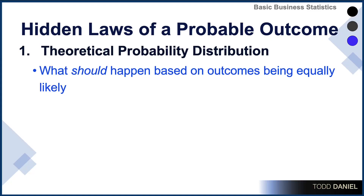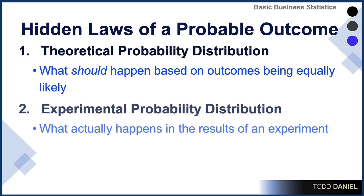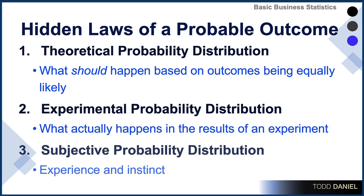There are three probability distributions that we will be discussing. Theoretical probability distributions are about what should happen, based on outcomes being equally likely. Experimental probability distributions are what actually happens as the result of an experiment. And subjective probability distributions are based upon experience and instinct.